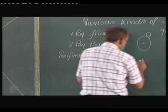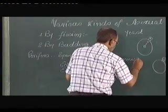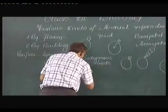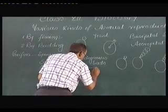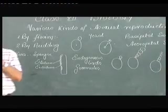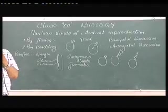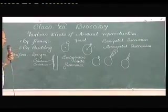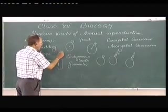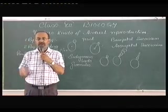These are endogenous buds, also known as gemmules. They are called endogenous buds because they are produced inside the body. When these gemmules are released from the endoderm surface, they come out of the body into the surrounding water and start leading their life independently.